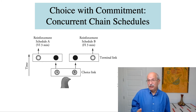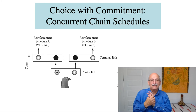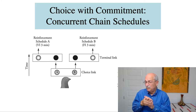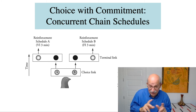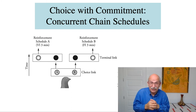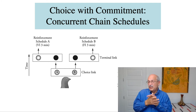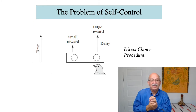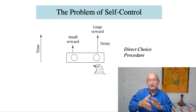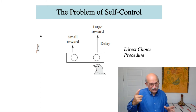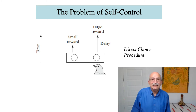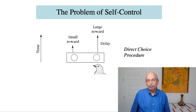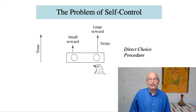Concurrent chain schedules have also been analyzed using the matching law, and there are a lot of complications involved. One of the interesting things about concurrent chain schedules is that they're relevant to the study of self-control. The next slide shows what's called the basic self-control problem, which typically shows up in what's called the direct choice situation.